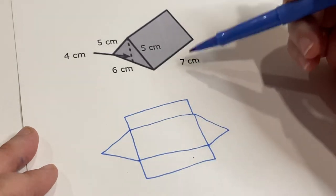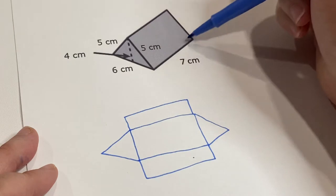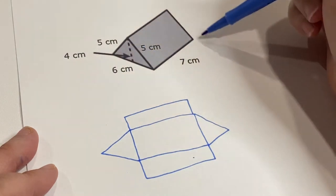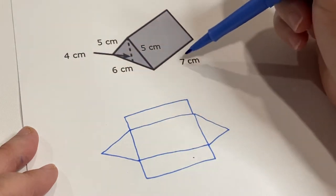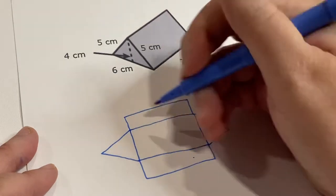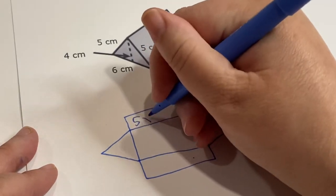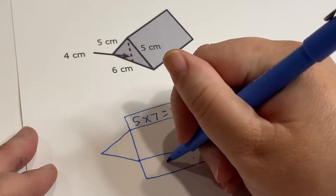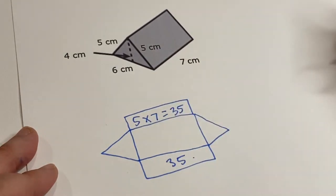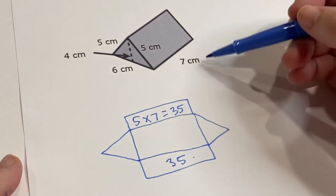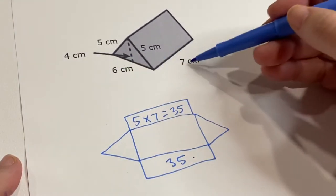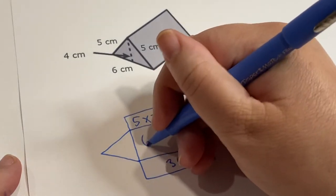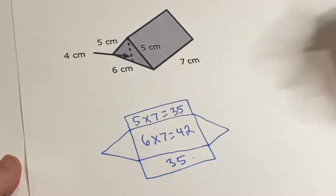So let's see what these measurements would be. This triangle, it's not the bottom, sorry, rectangle. This rectangle, it's not the bottom rectangle. It's going to be 5 by 7, which equals 35, which means this one is also 35. See, I cut down on some of my work there. The bottom rectangle is going to be 6 times 7, which equals 42.